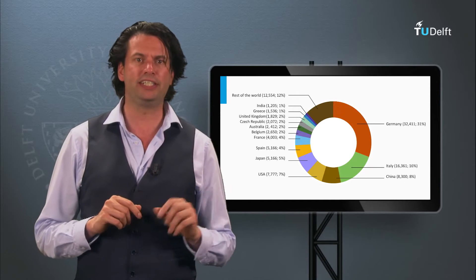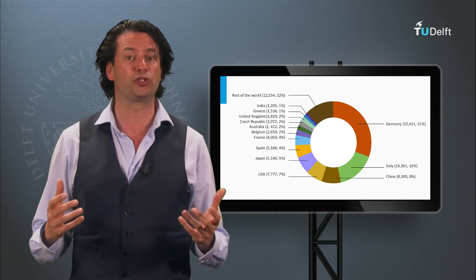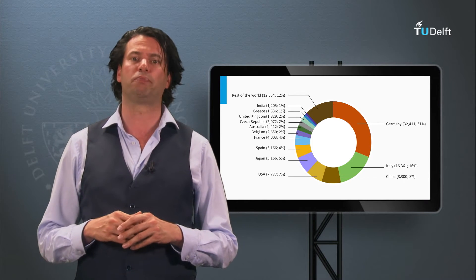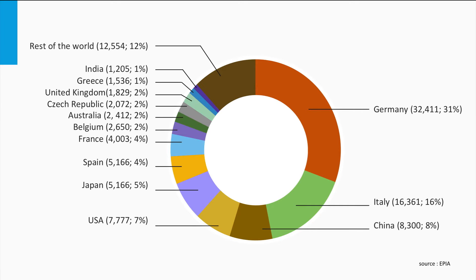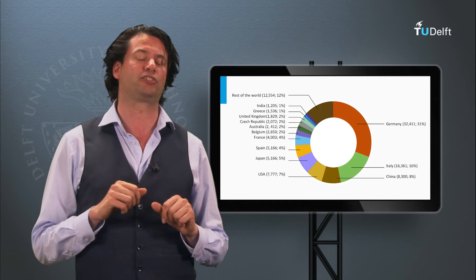Let's look in more detail at where PV is installed in the world. This figure illustrates the relative contribution of various nations to the total installed PV power in 2012. We can clearly see that 31% of the total PV capacity is installed in Germany, a result of the German government's progressive feed-in tariff policy of the last 10 years. Considering that Germany lies within an area with a relatively low radiation level, this shows the promising potential of solar energy for the sunnier parts of the world.